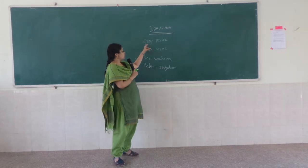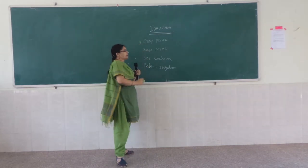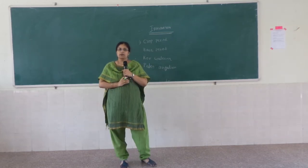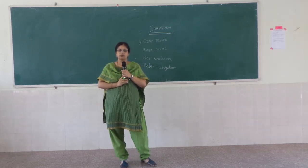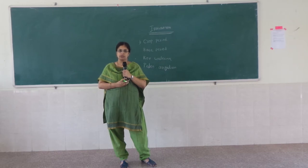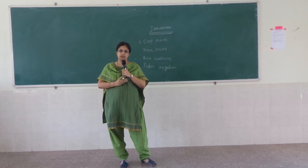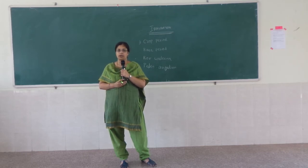The first definition is crop period. Crop period means the time period from the sowing of the seeds to the harvesting time for a particular crop. That time period of a particular crop is nothing but the crop period.